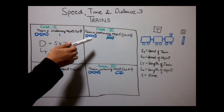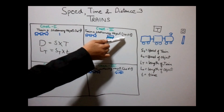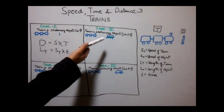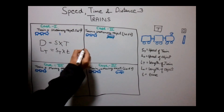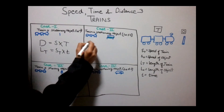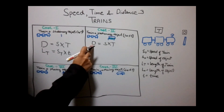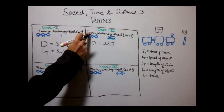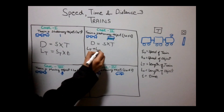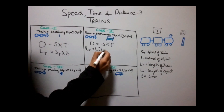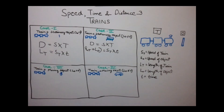In the second case, a train is crossing a stationary object but the length of the object is not zero — it is LO. Here the formula would be that the lengths of both objects add up, so the distance equals speed into time, giving us: LT plus LO equals ST into T.